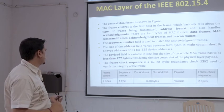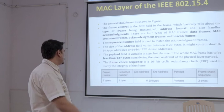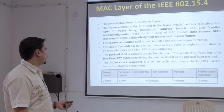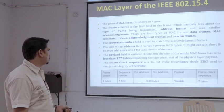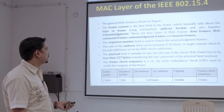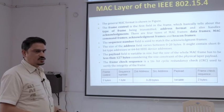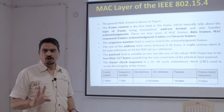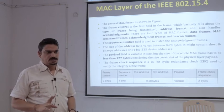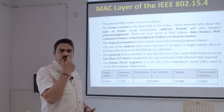Then there is the address field, which varies between 0 to 20 bytes. Why does it vary from 0 to 20 bytes? Because if you are using a sensor node, sensor nodes do not follow IP addresses. For reference, IPv4 is 32-bit in size.